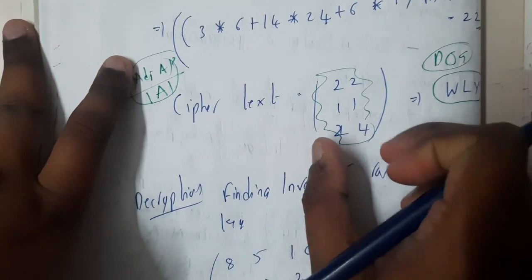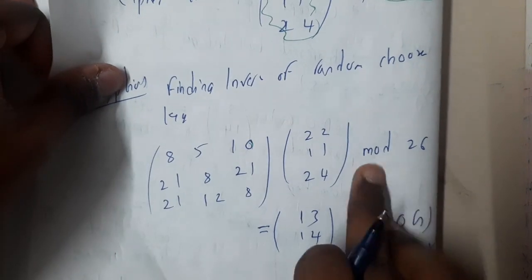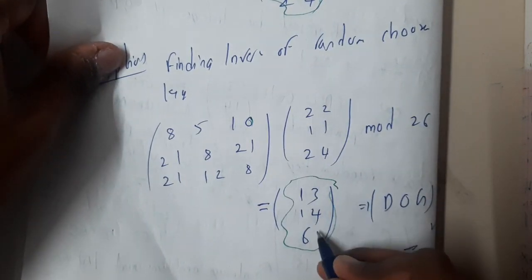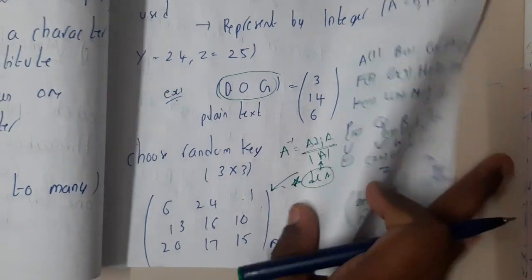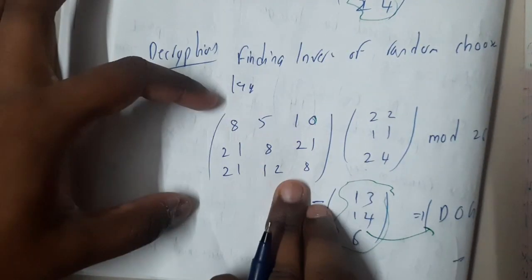Once you get this as your result, you will be multiplying your result with the cipher text which you got. If you multiply and again divide it with mod 26, you will be getting your value. If you observe, these values are nothing but our original text values.